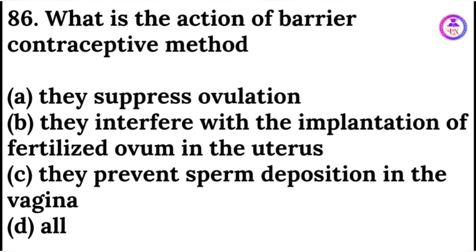What is the action of the barrier contraceptive method? The action of the barrier contraceptive method is that they prevent sperm deposition in the vagina.